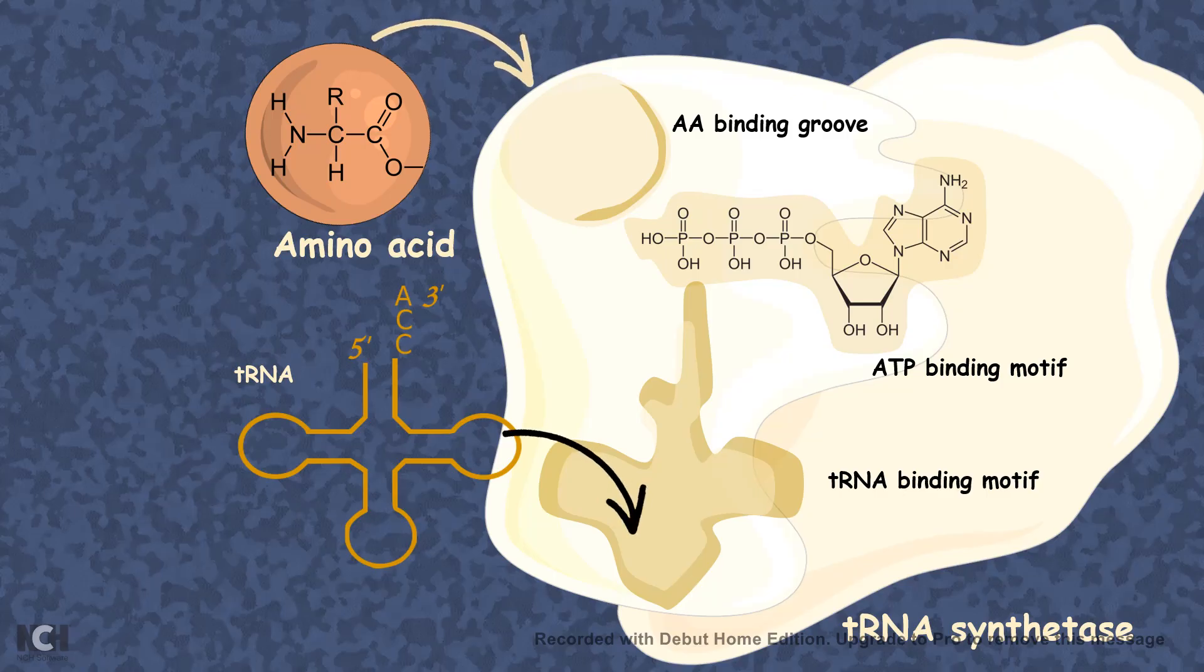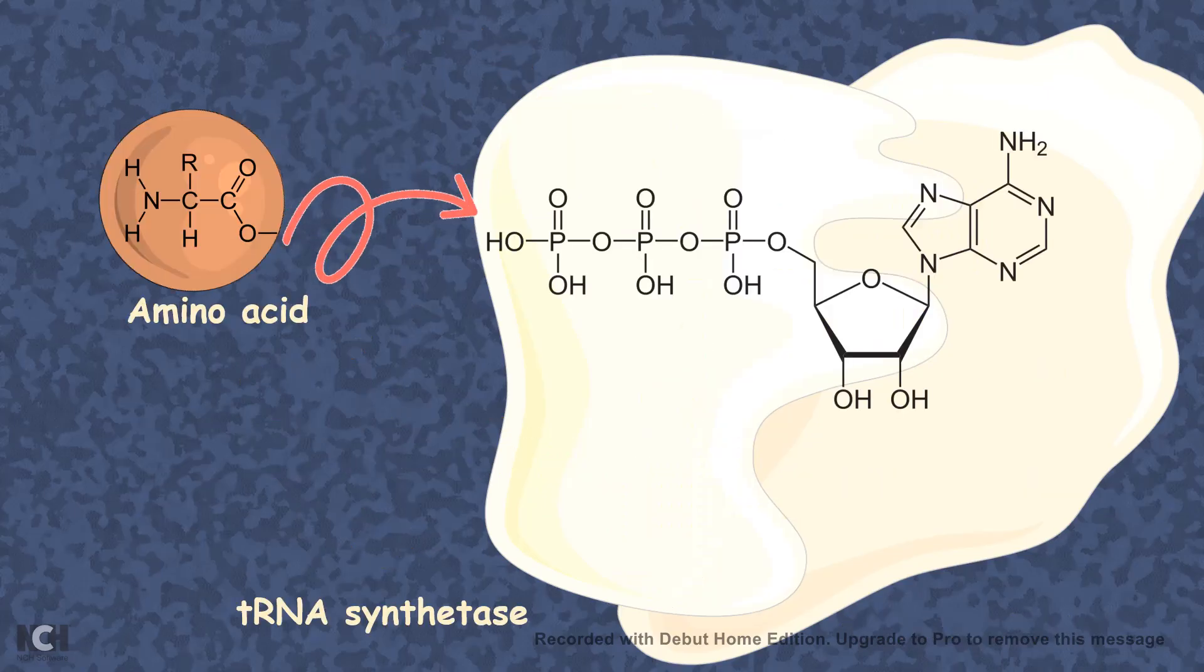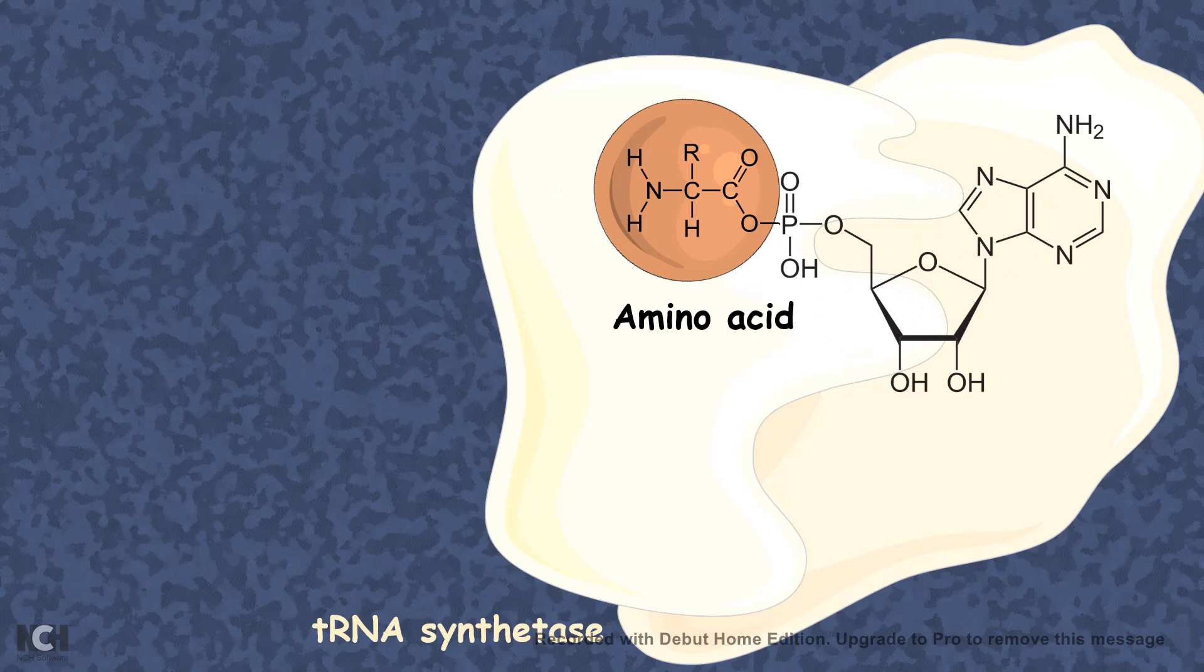Now let's talk about the aminoacylation process in a bit more detail. Before that, you should always remember that Mg2+ ions are really important in this process of aminoacylation. So the first step in this aminoacylation process is addition of the amino acid with the ATP which is already bound to the ATP binding motif. So the amino acid forms bond with the phosphate group of the ATP and stays there in the active site.